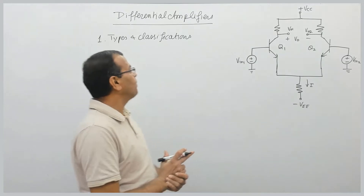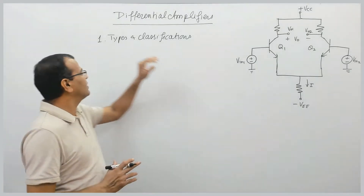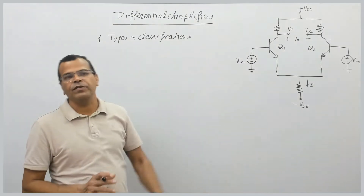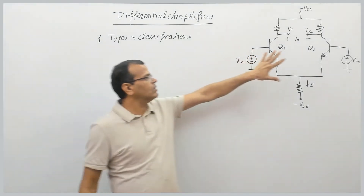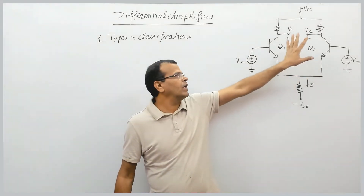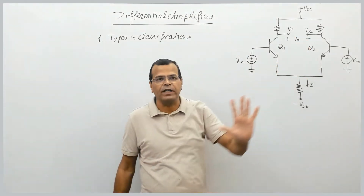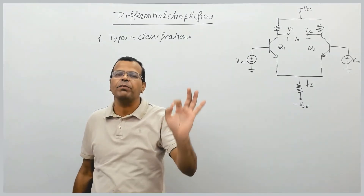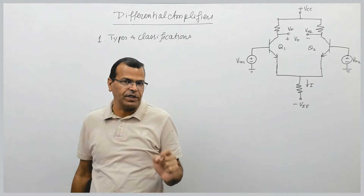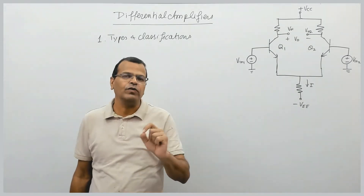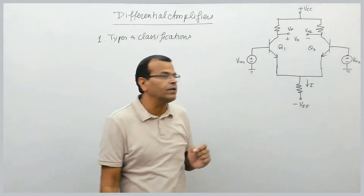We will discuss a small topic first, that is the types and classification of differential amplifiers. You can see I have drawn the circuit diagram of a differential amplifier, which is a BJT-based differential amplifier. The differential amplifier can be either BJT-based or MOSFET-based. We will study both MOSFET as well as BJT-based differential amplifiers.